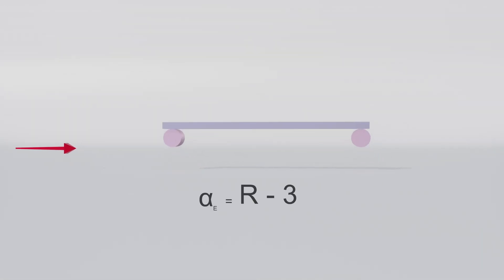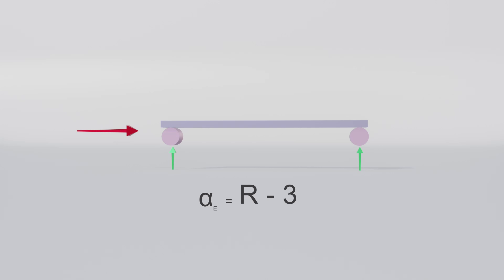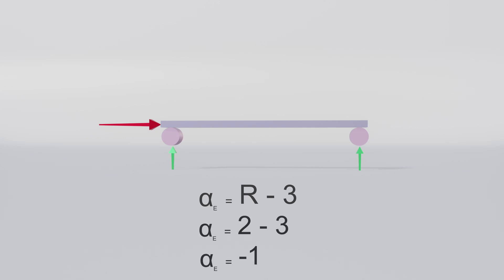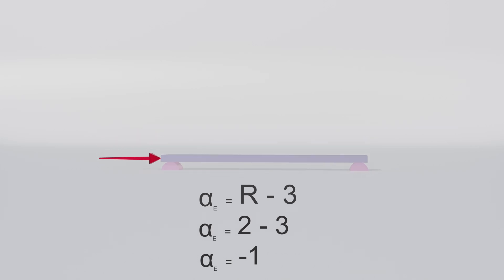In mathematical terms, if we look at the stability equation, it has two reactions, and 2 minus 3 is negative one. As this value is less than zero, hence the structure is unstable.